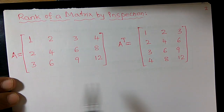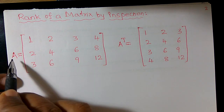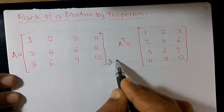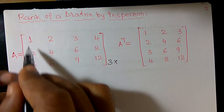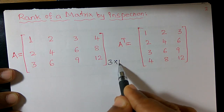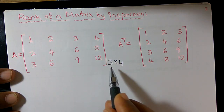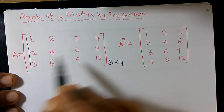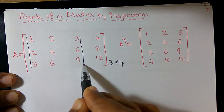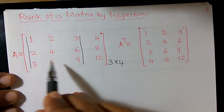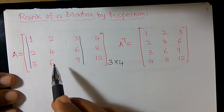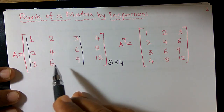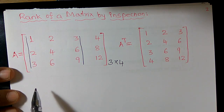Now I want to consider another example. A is given with three rows and four columns, so the order is 3 cross 4. I want to construct a minor of order 3. I cannot construct a minor of order 4, so this would be the largest non-zero minor if it exists. Let me expand the minor of order 3.